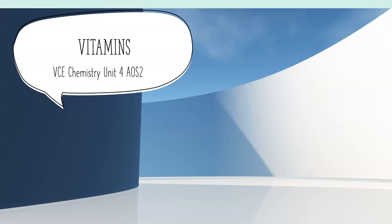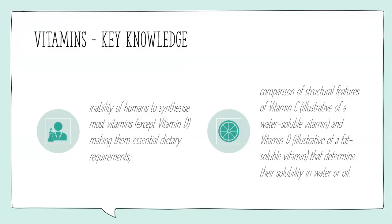Welcome back to our series of videos on food chemistry. Today we're looking at vitamins and how they relate to the different biomolecules we've been studying. The key thing to understand is that humans don't have the ability to synthesize most vitamins, except for vitamin D which is catalyzed by sunlight, making vitamins essential in our dietary requirements — we need to take them in from food externally.